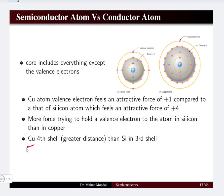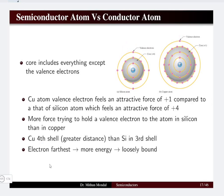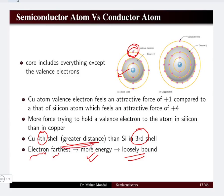More force is trying to hold the valence electron to the atom in silicon than in copper, because silicon has plus four and copper has plus one. Also, copper's valence electron is located in the fourth shell, whereas silicon's is in the third shell. If the electron is farther from the nucleus it will have more energy, meaning it will be loosely bound. So in copper the fourth shell is at greater distance than silicon's third shell.